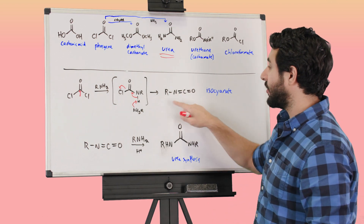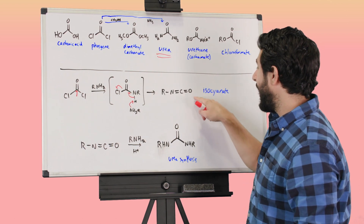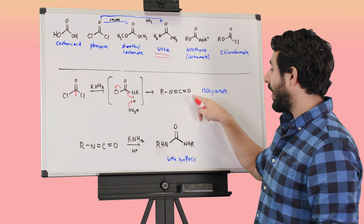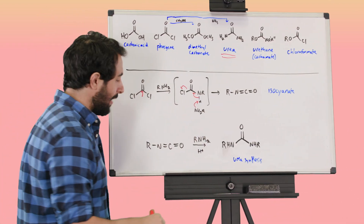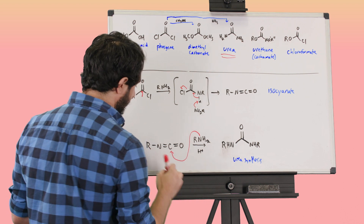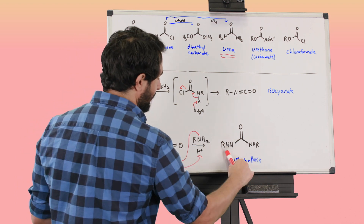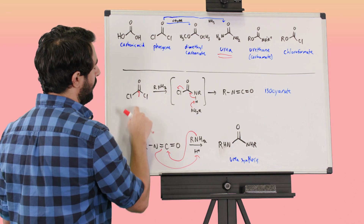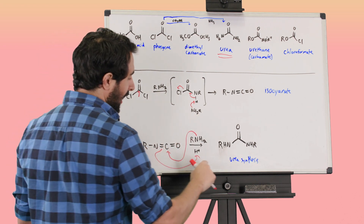Then a second bond forms between nitrogen and carbon, kicking off the chlorine — and that gets us to a species with a double bond between nitrogen and carbon while we've still got that carbonyl. This is called an isocyanate — that refers to this functional group. Now with the isocyanate, we can have another equivalent of that amine attack. This pi bond gets protonated, and that gets us to a urea — we added one amine, kicked off the other chlorine, then added another equivalent of that amine, giving us the urea.